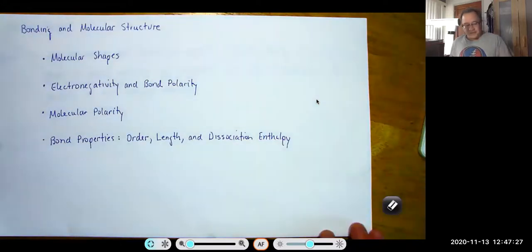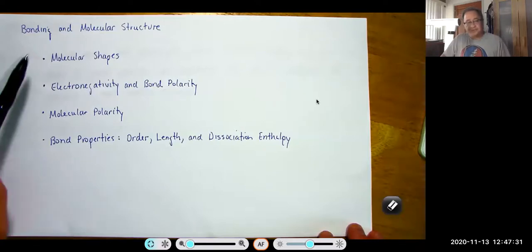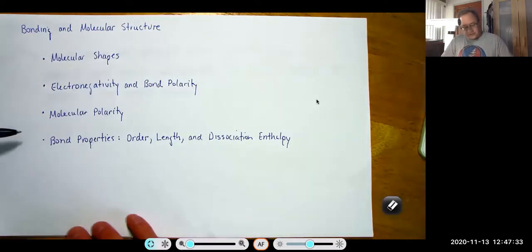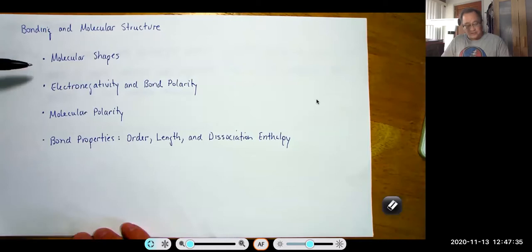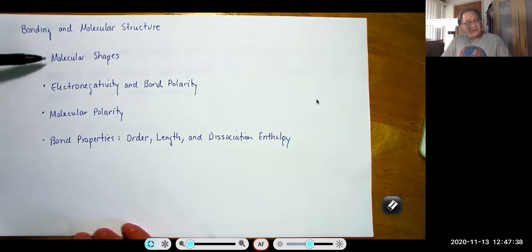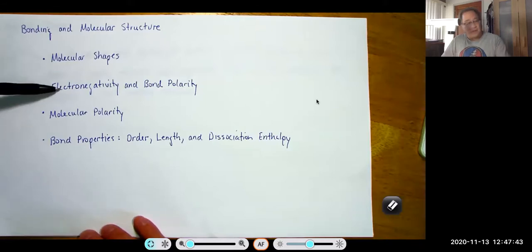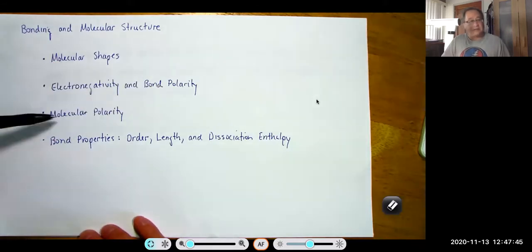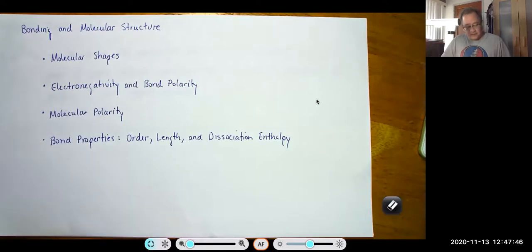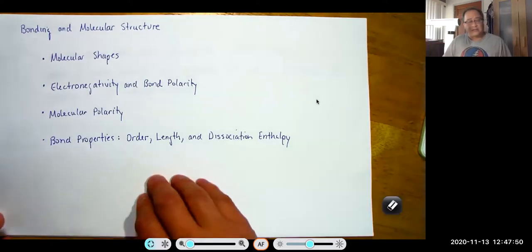This is the second half of bonding and molecular structure, and we're going to break this up into three parts. Molecular shapes will be one part — it's kind of a long part. Then we'll be looking at electronegativity and bond polarity, along with molecular polarity. And finally, we'll do bond properties: order, length, and dissociation enthalpy.